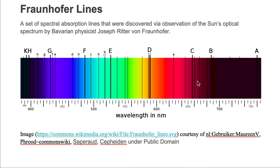The colored background is the continuous black body spectrum of the sun. To the right of red we have infrared, and to the left of violet we have ultraviolet. The A Fraunhofer line is in the infrared, whereas the K Fraunhofer line is in the ultraviolet.